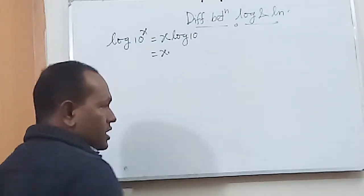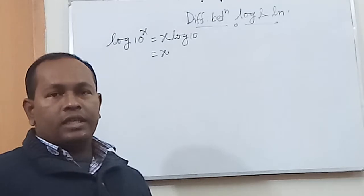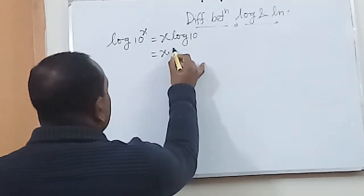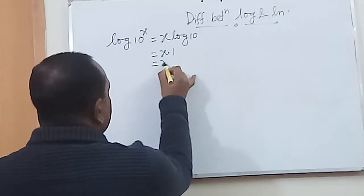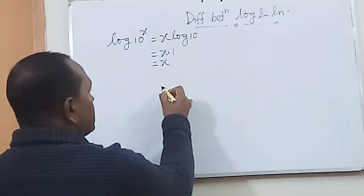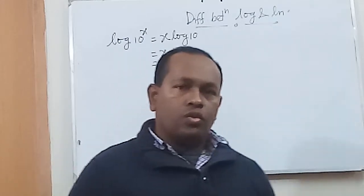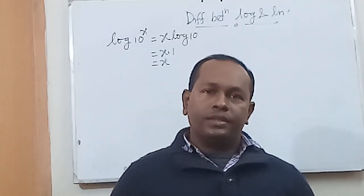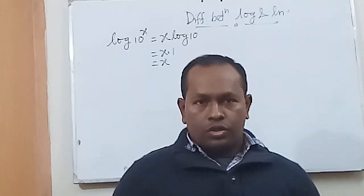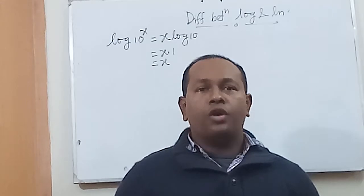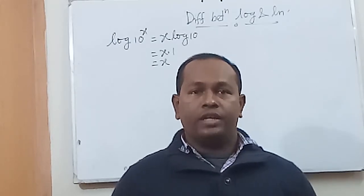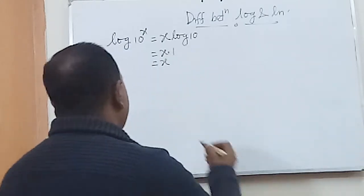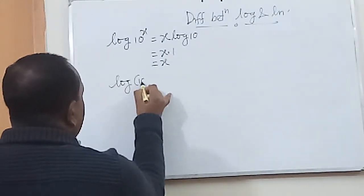x times log 10 is nothing but 1, so x times 1 equals x. So what have you learned? Common log means how many multiples of 10 we have. So log 10 into 10 is equals to log 10 squared.